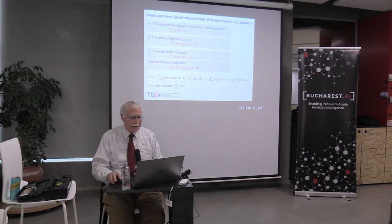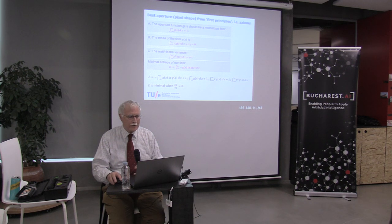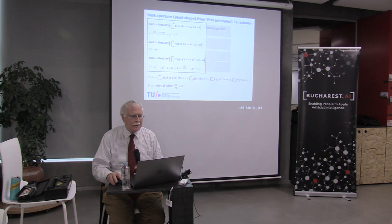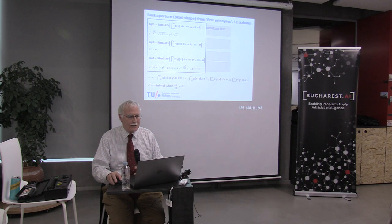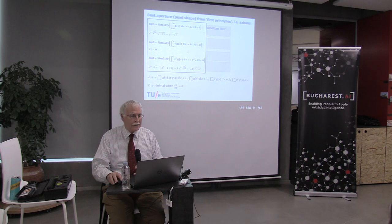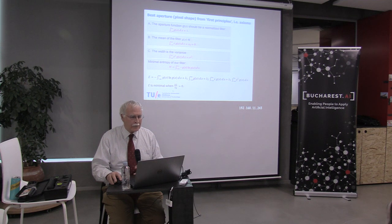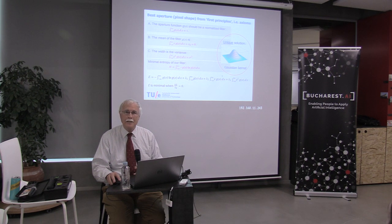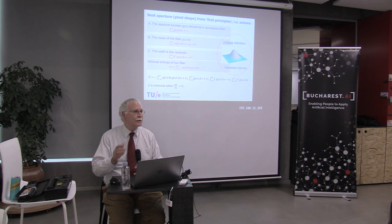I make a formula where I have my entropy and I put in all three constraints — one for normalization, one for the mean, one for the variance — and I go find the minimum. If I put this in Mathematica, I calculate when the normalization is 1, when the mean is 0, when the variance is sigma-squared. I get three equations with three unknowns: lambda 1, lambda 2, and lambda 3. I can tell Mathematica to solve these three equations. And what do I find? I find a unique solution — only one filter fits all this. It's the Gaussian kernel. That is the best filter. It has no junk.